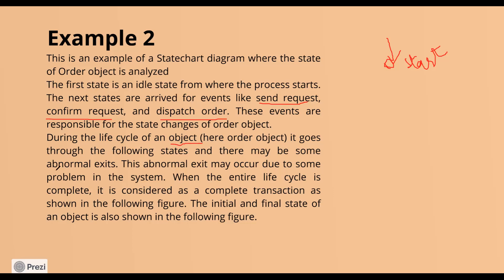During the life cycle of an object, sometimes you may receive a message that the order cannot be processed — these are abnormal exits. For example, you place an order but your WiFi goes off, so they don't know if you ordered. Or the restaurant has a closing time and doesn't receive your order. These abnormal situations must be included in the state transition diagram.